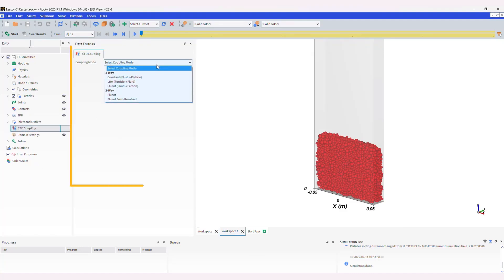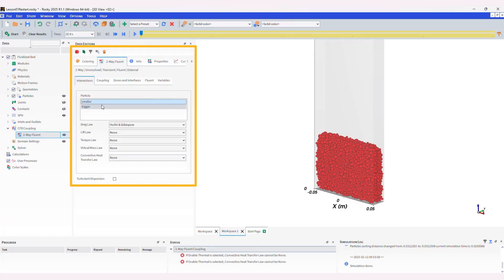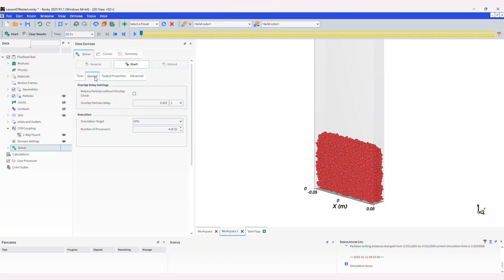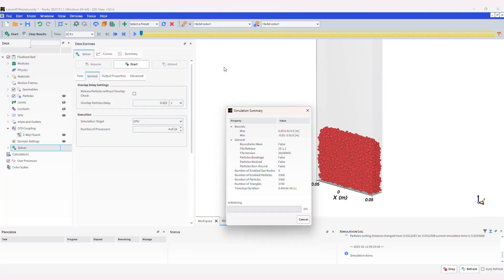Finally, the CFD case is imported in the two-way coupling mode option available in ANSYS Rocky. After setting the parameters, the simulation is run again.